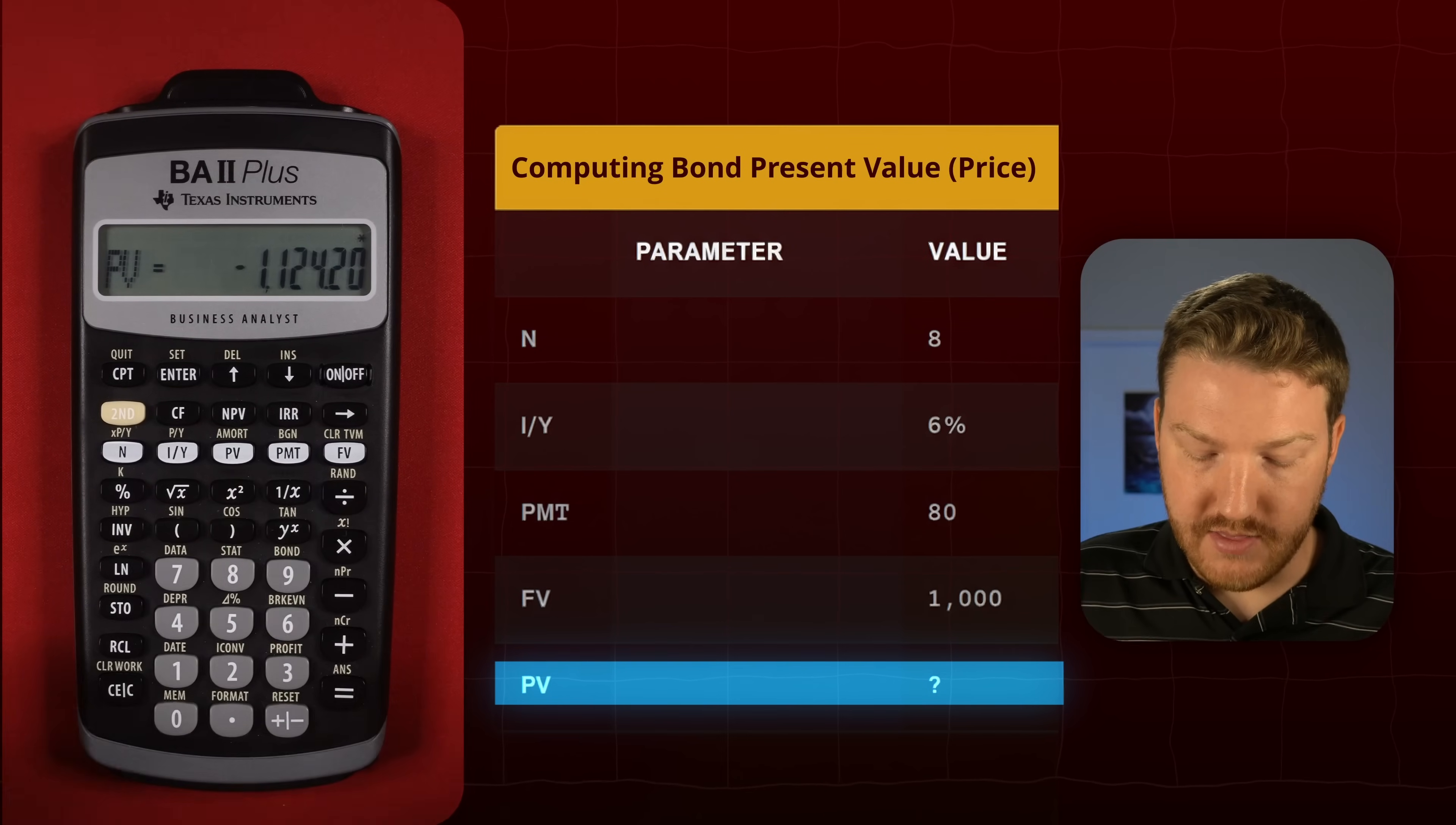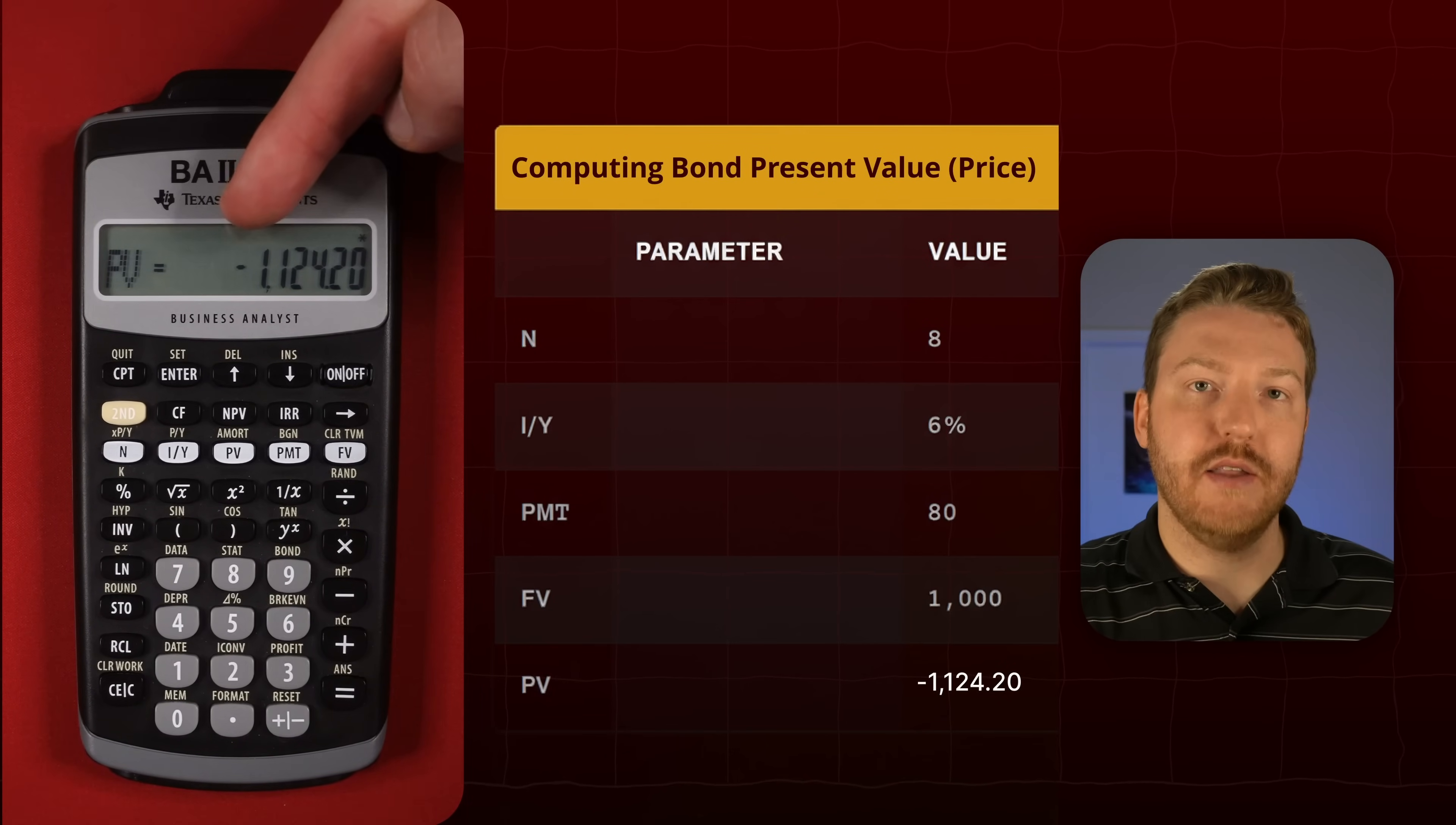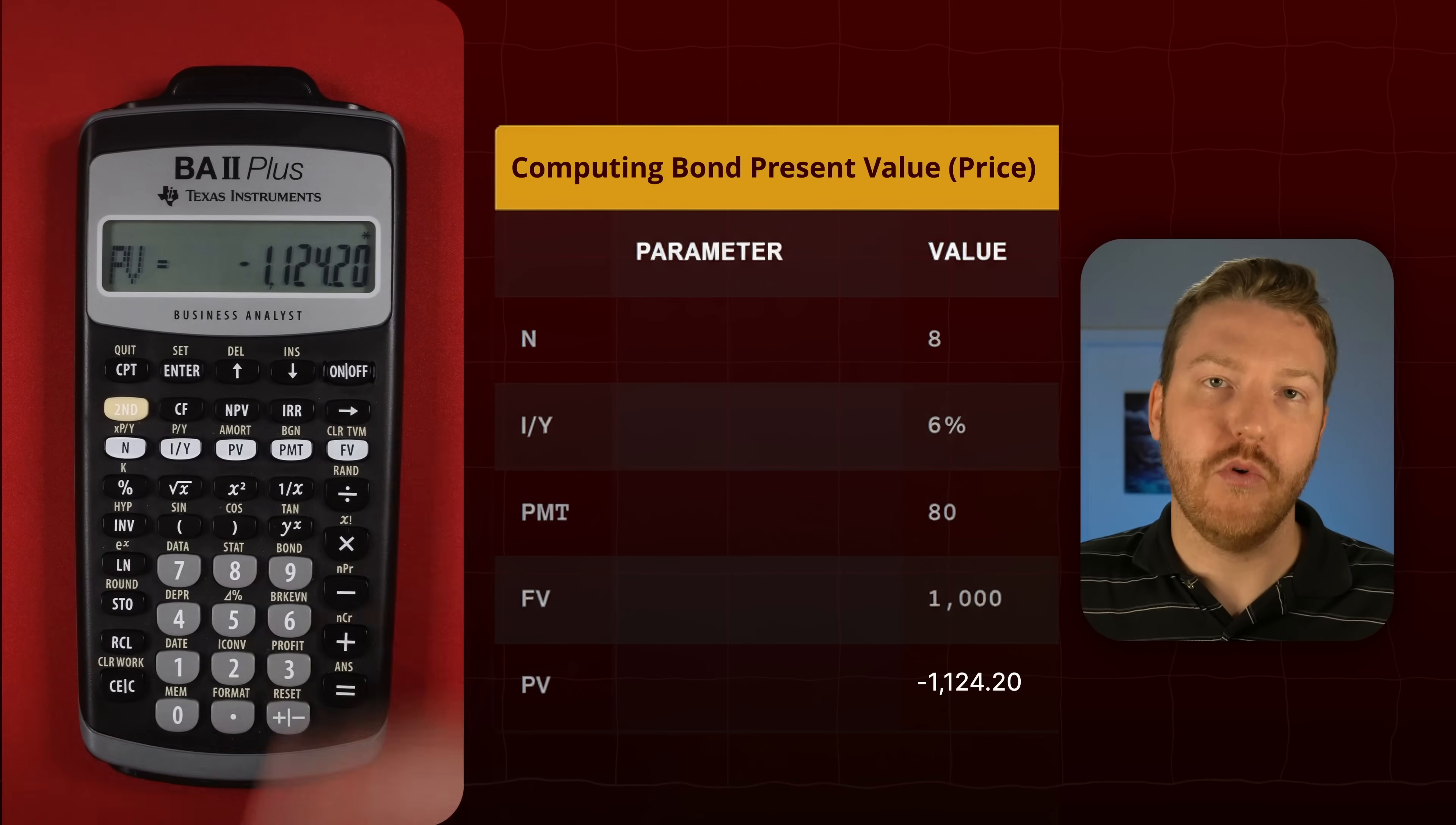So we'll do compute and then present value, and we get negative one thousand one hundred twenty-four dollars and twenty cents. So we would have to pay that much today to buy this bond. That negative represents the cash outflow. And because we're getting a greater payment or coupon rate than the interest rate, we better pay more today than the balloon payment at the end or the future value.